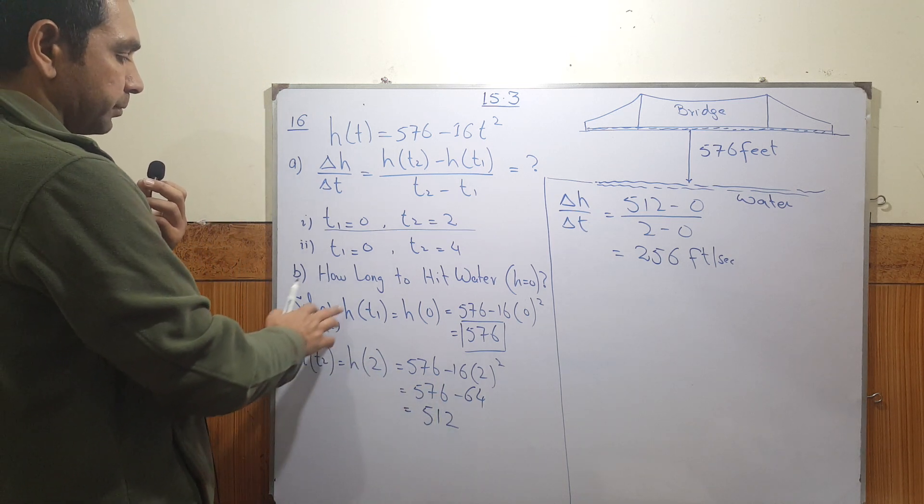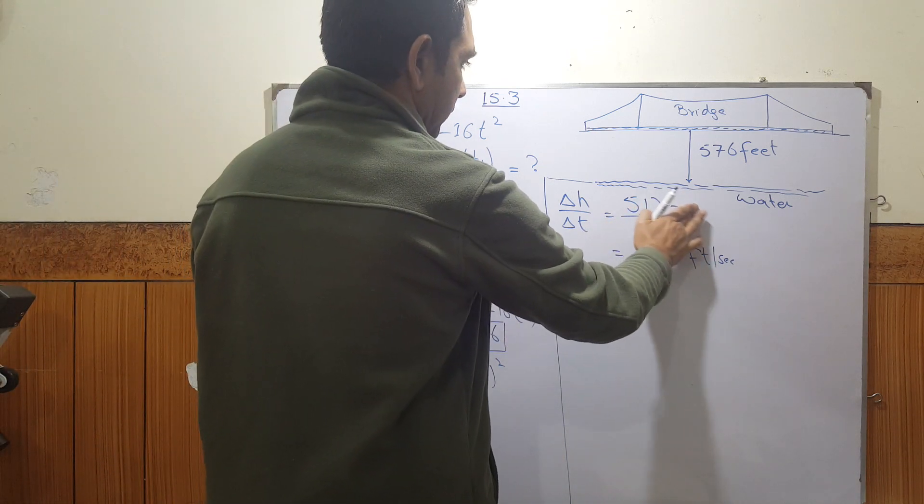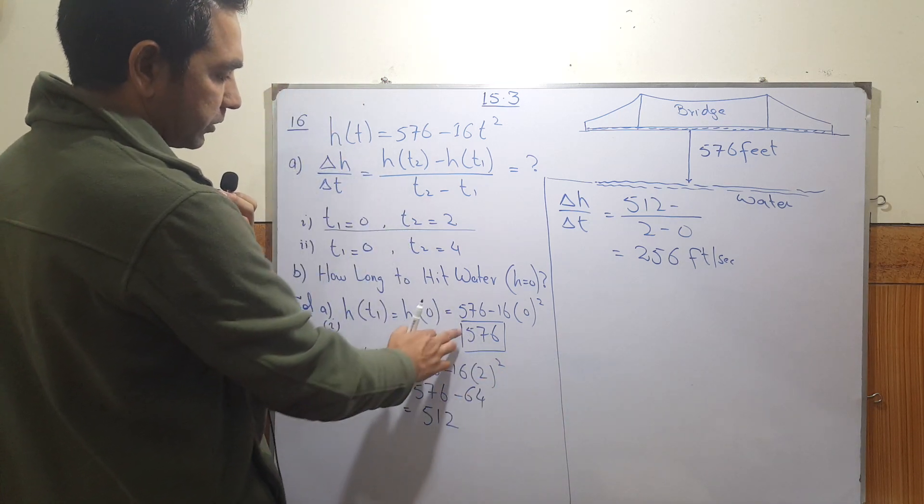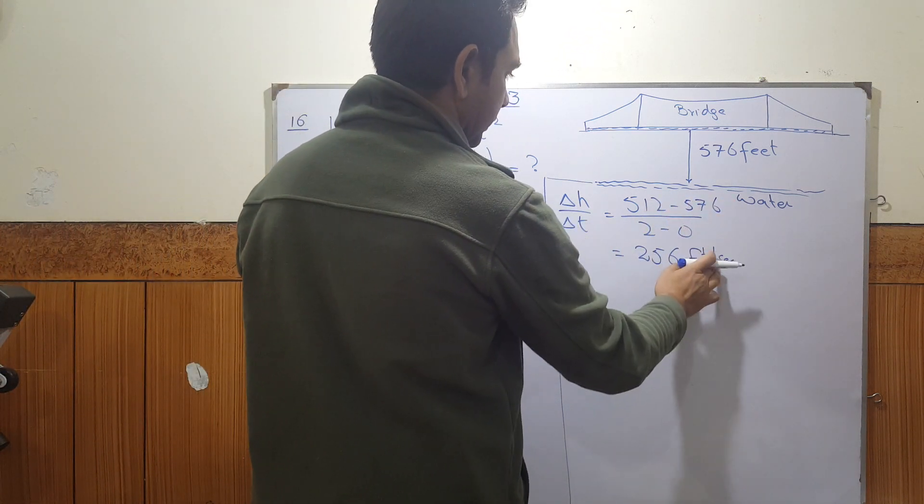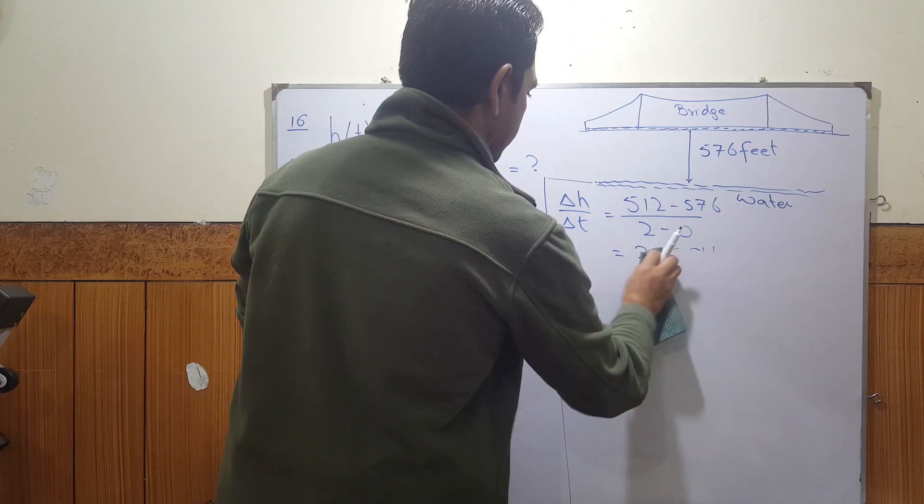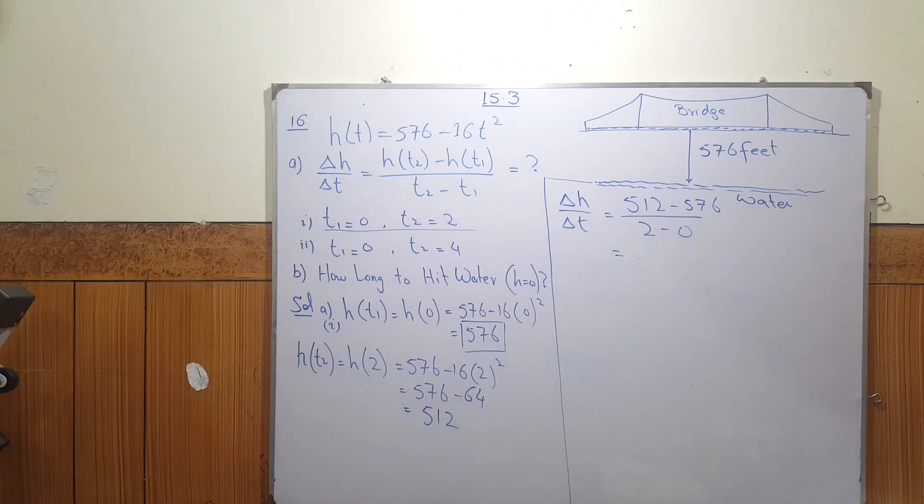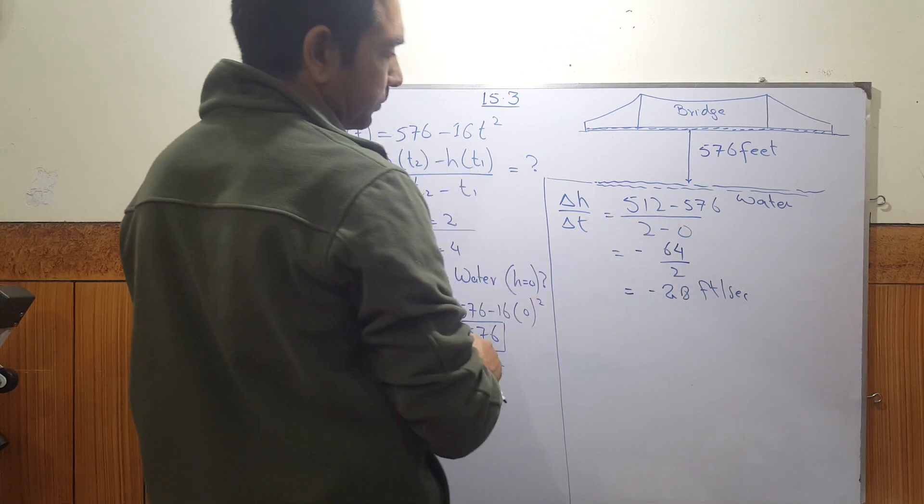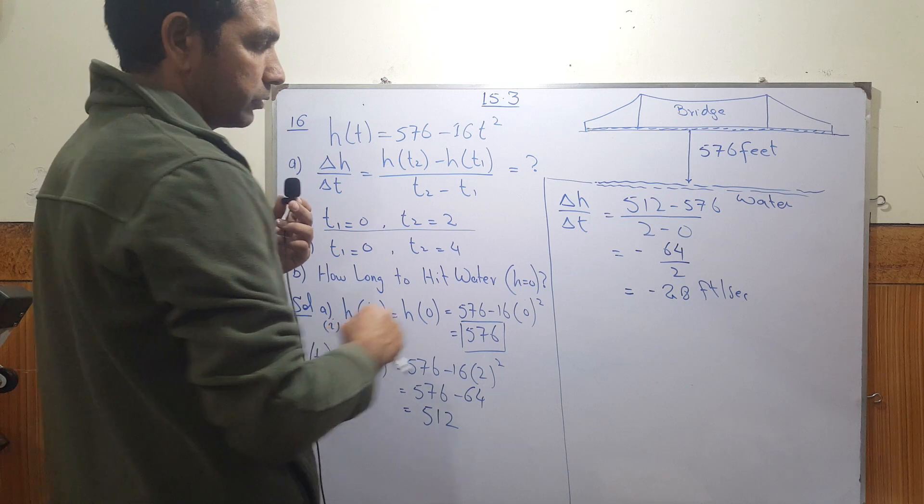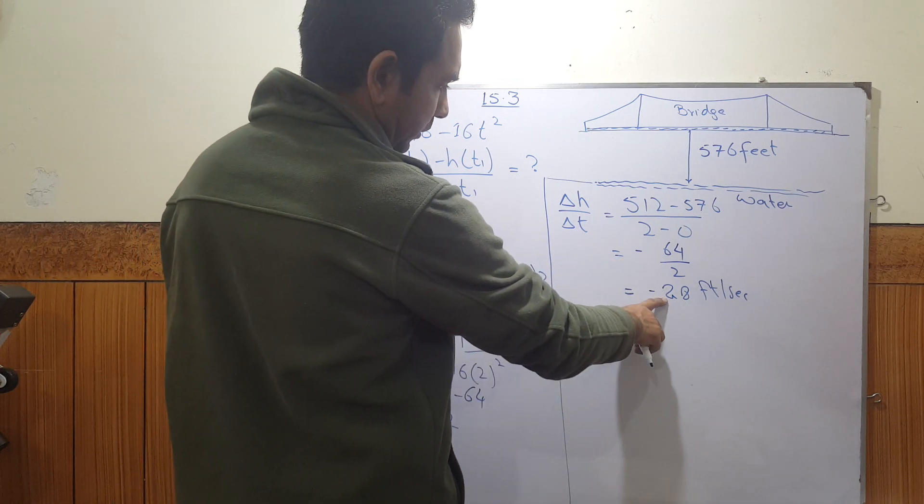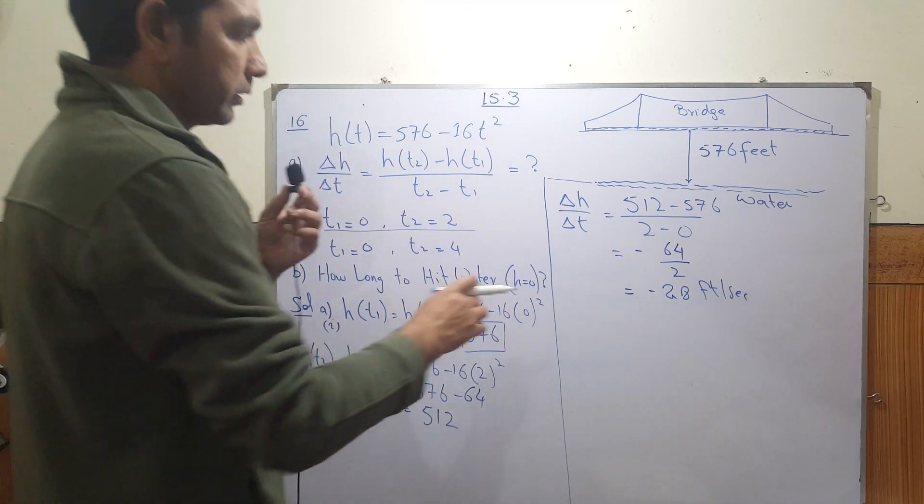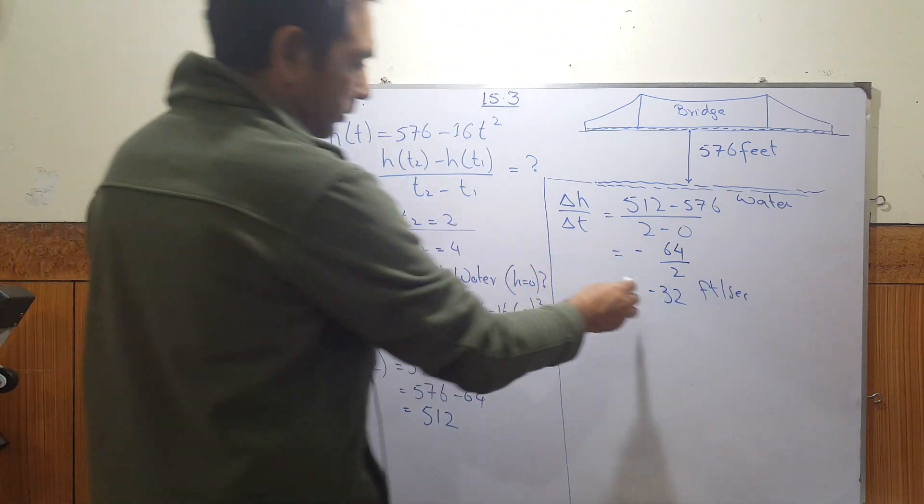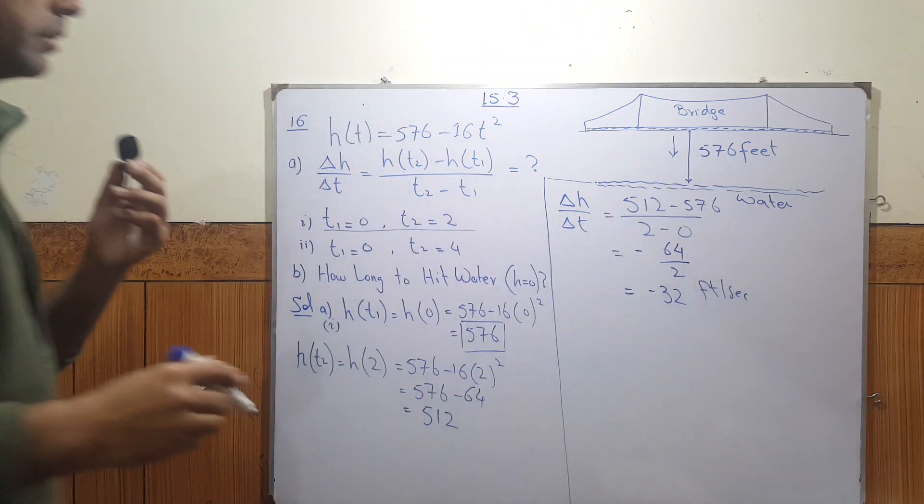So the average rate of change would be substituting these values, which I wrote wrong. So h(2) is 512 and h(0) is 576. So we can subtract that and divide it by two. This is 512 minus 576 divided by two minus zero. If you subtract that gives us minus 64 over two, and if you divide this by two that gives us minus 32. And the negative sign shows that the object is falling down towards the water.